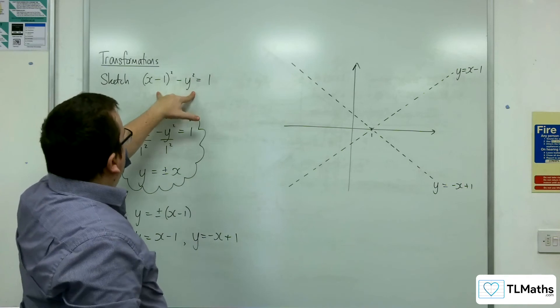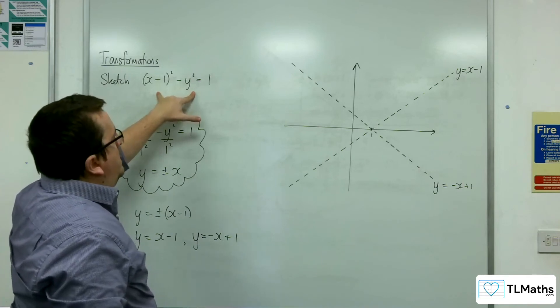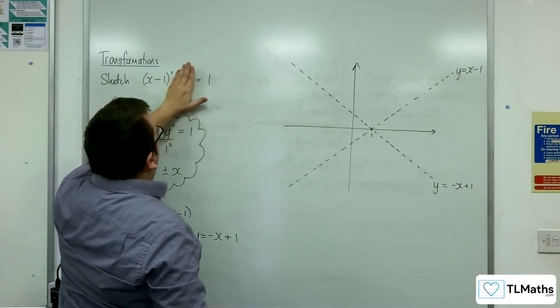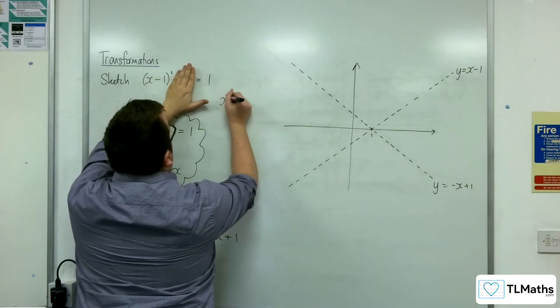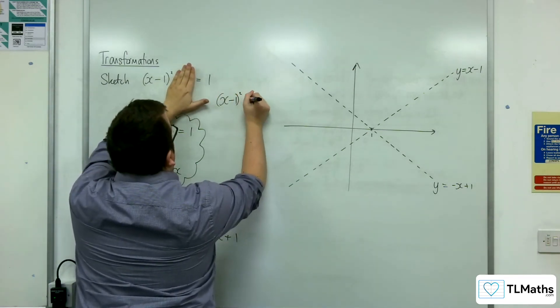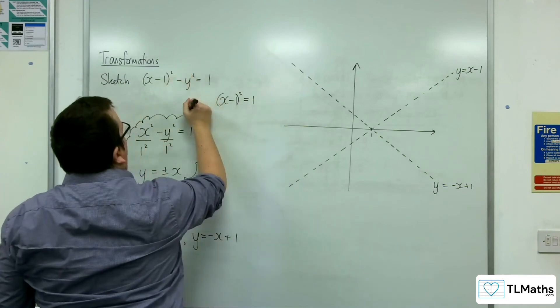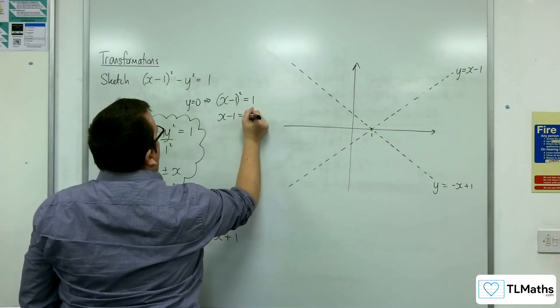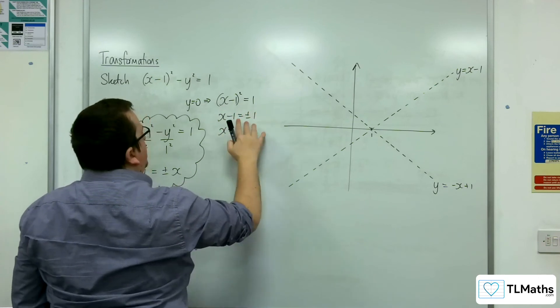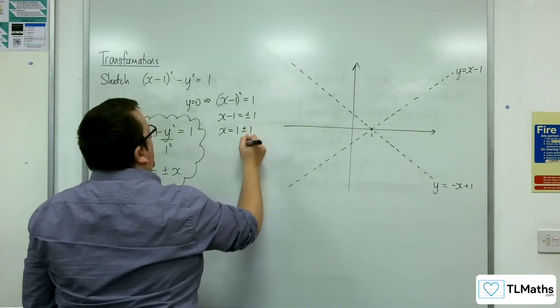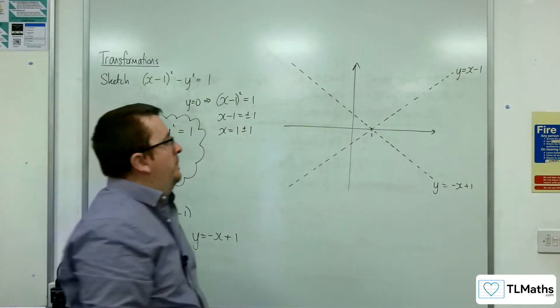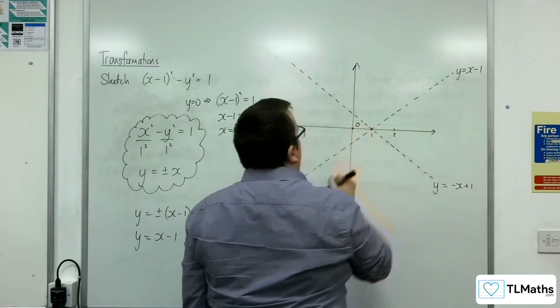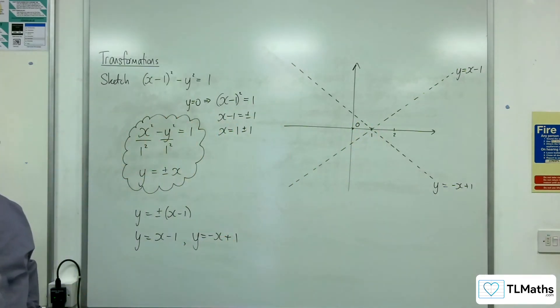Right. So if we go back to the original graph, then I want to find out where it crosses the x-axis. That's when you put y is equal to 0. So we're going to solve x take away 1 squared equals 1, when y is 0. So x take away 1 is plus or minus 1. So x is equal to 1 plus or minus 1, which is either 2 or 0. So 2 and 0 is where the curve is crossing the x-axis.